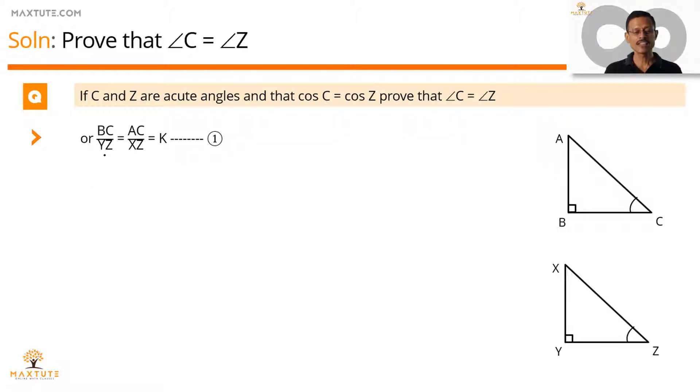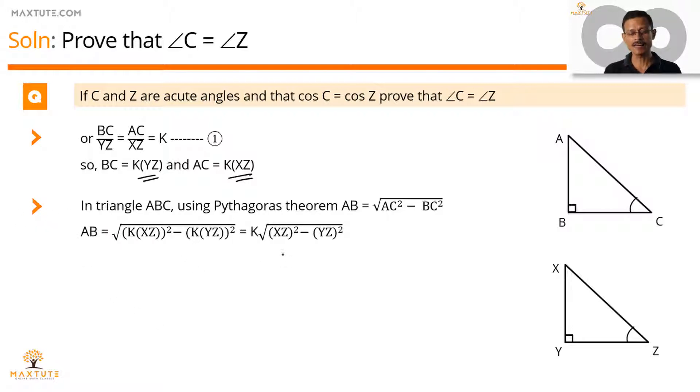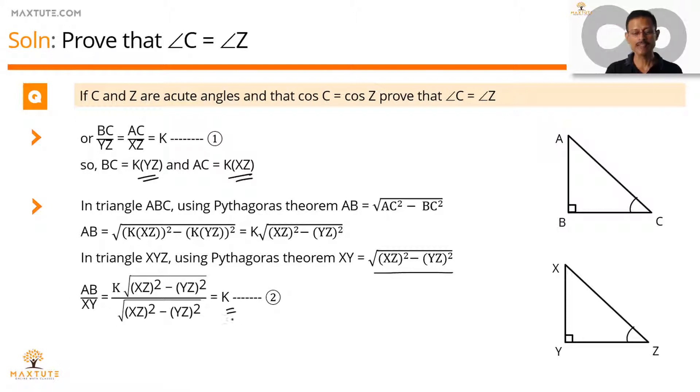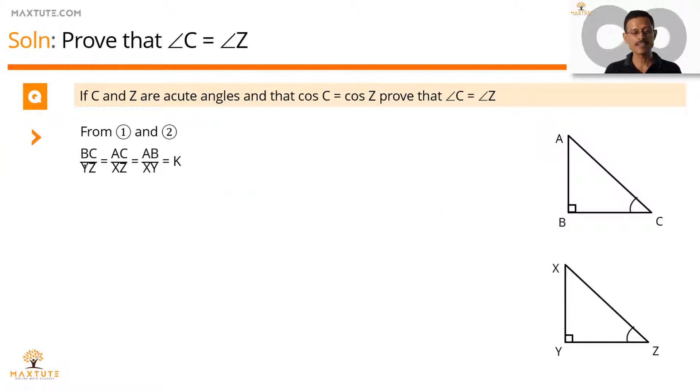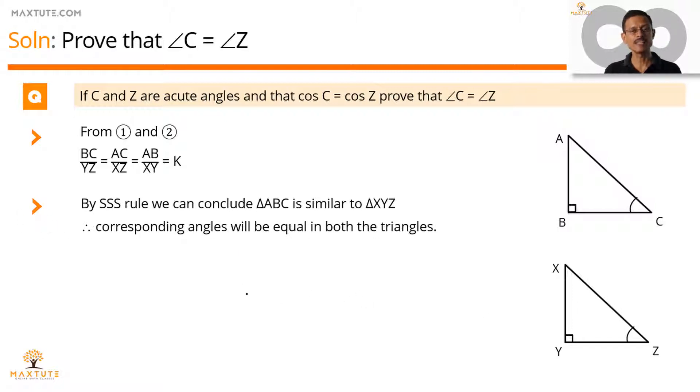We started with this, so we can write BC is equal to K into YZ and AC is equal to K into XZ. We are going to apply Pythagoras theorem on triangle ABC and find out the value of AB, which is equal to AC square minus BC square, square of the hypotenuse minus square of the adjacent side. We can replace AC with K into XZ and BC with K into YZ. So essentially we end up getting AB to be equal to K into under root of XZ square minus YZ square. Let's apply the Pythagoras theorem on triangle XYZ and find out the value of XY, which is equal to square root of XZ square minus YZ square. Find AB by XY, which is equal to K. Now, whatever we have seen in one and two, the K should be equal. So equating one and two from these two expressions, we get BC by YZ equal to AC by XZ is equal to AB by XY is equal to K, which essentially means that using SSS rule, we can conclude that these two triangles are similar. Corresponding angles of two similar triangles will be equal, therefore angle C equals angle Z.